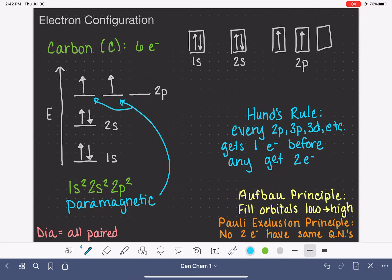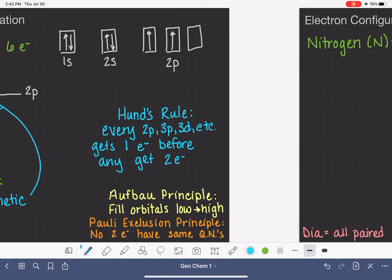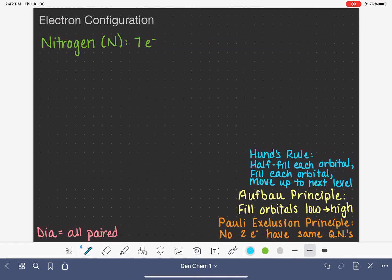Let's continue with our next example, which is nitrogen. Before we get started, you can see that I carried over a synopsis of Hund's rule. We're going to half fill each orbital, then fill up each orbital, and then move up to the next level. That's our steps of progressing through the diagram. So for nitrogen, let's sketch out an empty energy level diagram: 1s, which is followed by 2s, which is followed by the 2p orbitals.